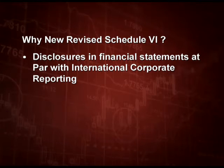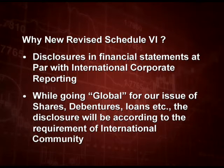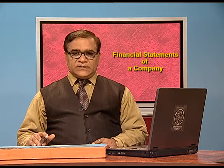Let us discuss the form and content of revised Schedule 6. Why is this new revised Schedule 6 there? Because disclosure in financial statements should be made at par with international corporate reporting. The second reason is while going global for issue of shares, debentures and loans, the disclosure will be according to the requirement of the international community at large. Now, what are the salient features of this revised Schedule 6? First, it is only in a vertical format. Previously horizontal format was very popular, but now only vertical format is allowed.